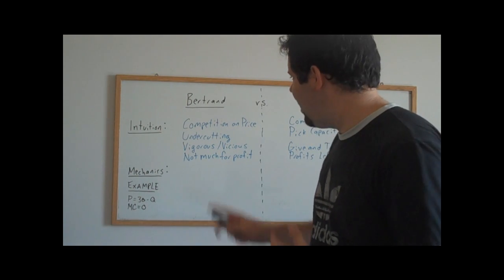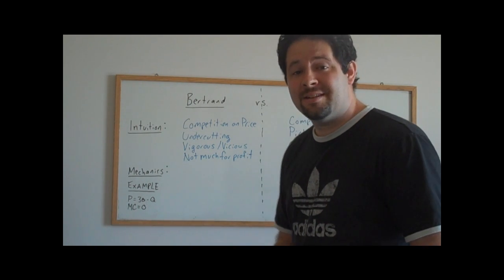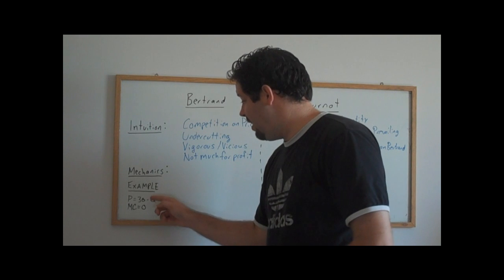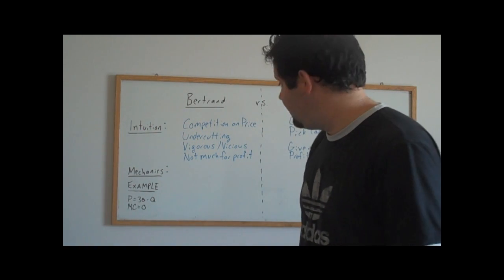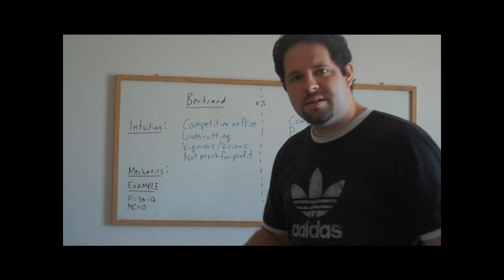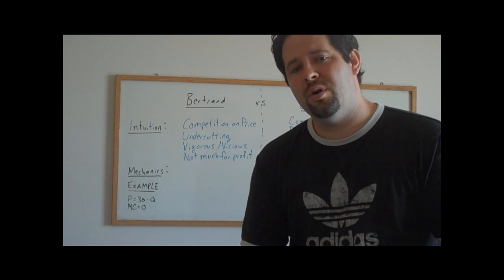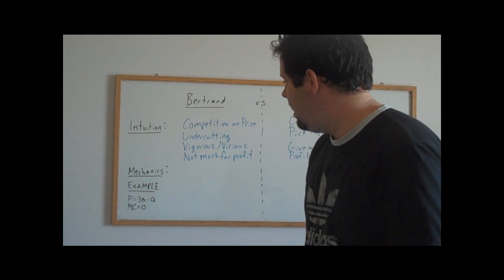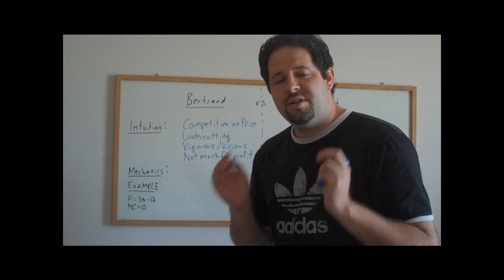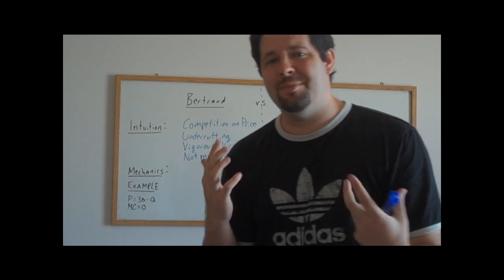So let's consider what happens as far as the mechanics. We've got an inverse demand curve of P equals 30 minus Q. We've got marginal cost of zero. Now in Bertrand competition, the way it mechanically works is say we have two firms in the market. Each gets to pick a price and they pick simultaneously.